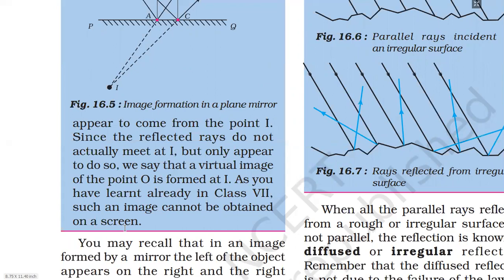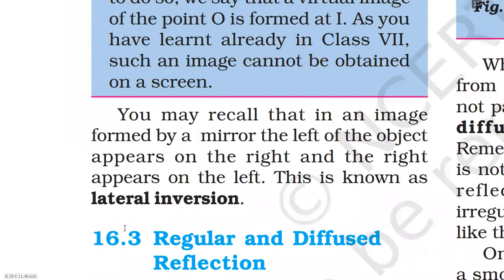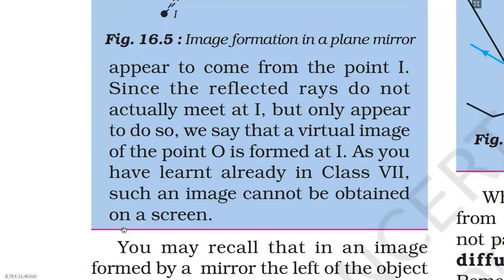You may recall that in an image formed by a mirror, the left of the object appears on the right and the right appears on the left. This is known as lateral inversion. To understand this, stand in front of a large mirror — if you hold something with your left hand, your image in the mirror will appear to hold it with the right hand.